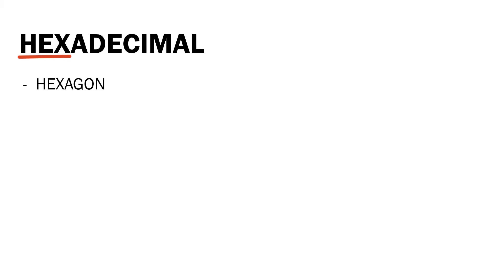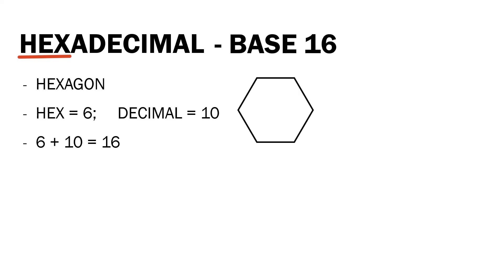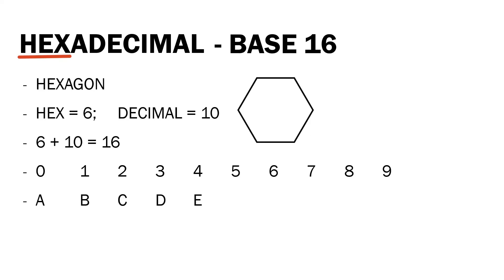Next we have the hexadecimal number system. When you hear the prefix 'hex,' I think of a hexagon — a polygon with six sides. 'Hex' equals six and 'decimal' equals ten, so six plus ten is equal to 16. Hence hexadecimal is a base-16 number system, which comprises ten decimal digits — 0, 1, 2, 3, 4, 5, 6, 7, 8, and 9 — and the first six letters of the alphabet: A, B, C, D, E, and F. Letter A corresponds to 10 in the hexadecimal number system, B corresponds to 11, C to 12, D to 13, E to 14, and F corresponds to 15.